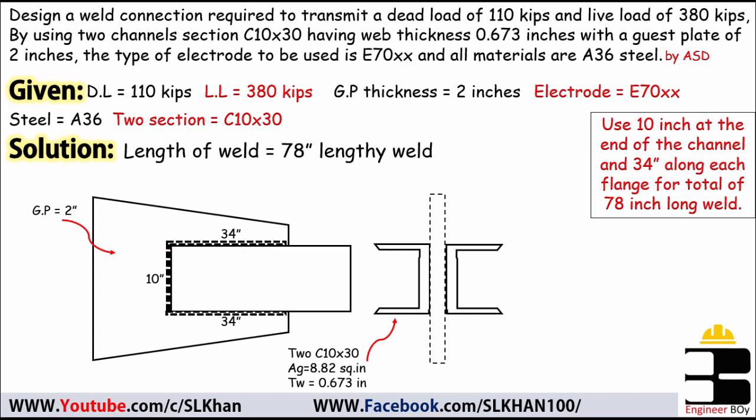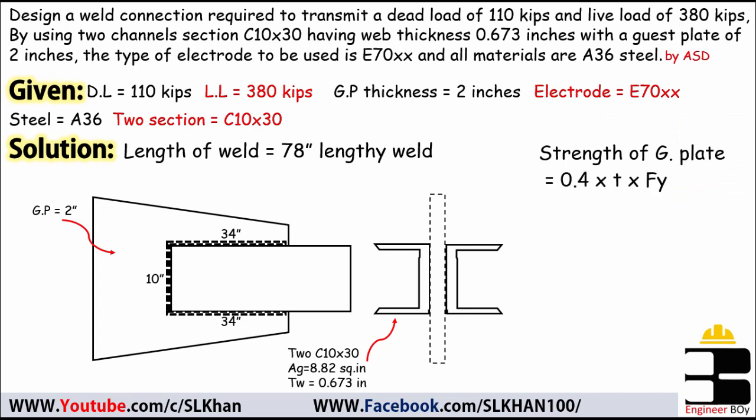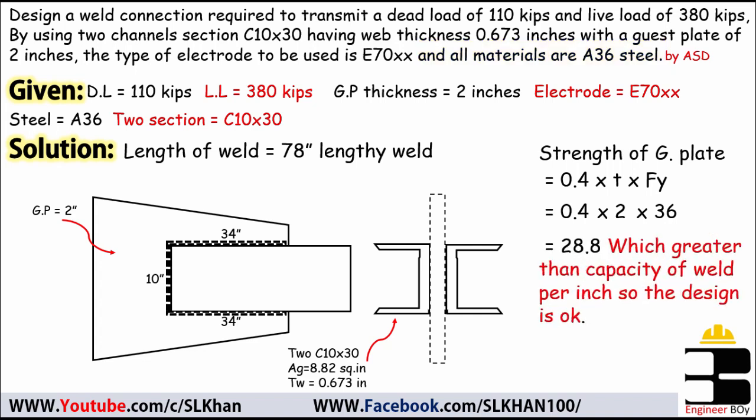We're not done yet — we must check the gusset plate strength to confirm the connection is adequate. Gusset plate strength = 0.4 × thickness × Fy = 0.4 × 2 inches × 36 ksi = 28.8 kips per inch. Since 28.8 kips/in is greater than the weld capacity of 4.64 kips/in, the design is acceptable. We provide 78 inches of weld length.